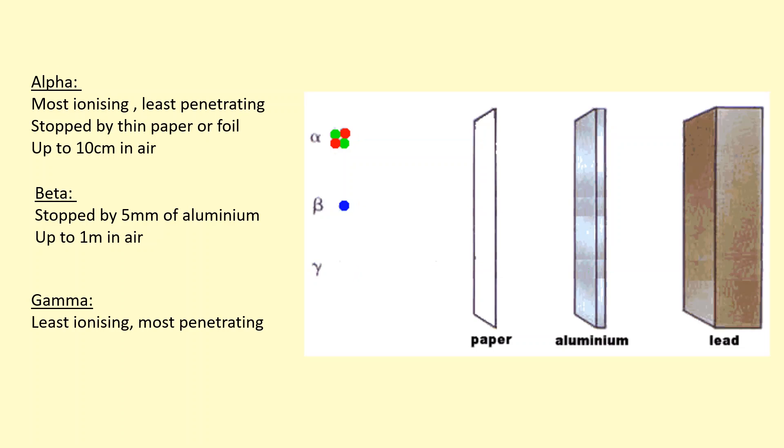Then we have gamma. Not to say that gamma isn't ionizing. It's just the least ionizing compared to other types of ionizing radiation. So it means that it's also the most penetrating.